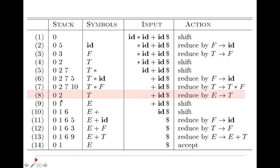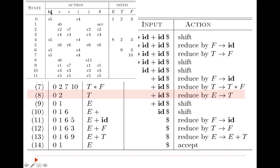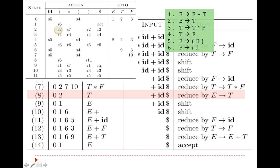Then we have 2 and plus, which gives reduce by rule number 2. Rule number 2 is e gives t. So t is replaced by e. State 2 is popped from the stack and we refer to 0 and e, which gives state 1. So 1 gets pushed onto the stack.